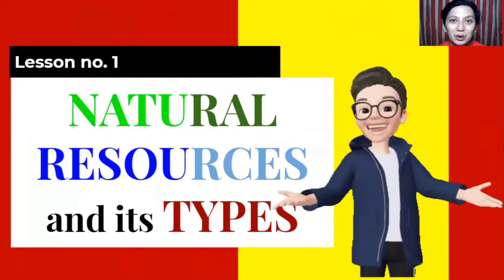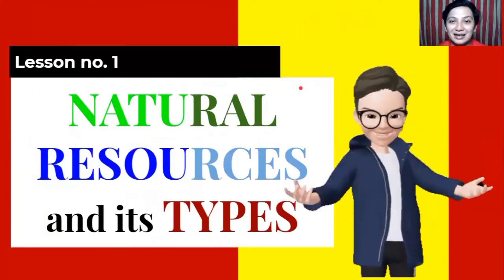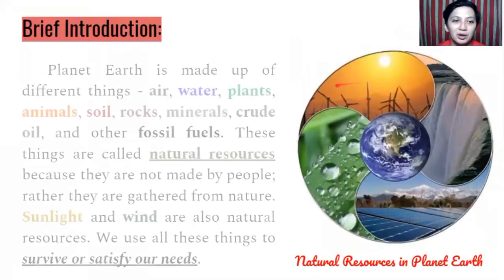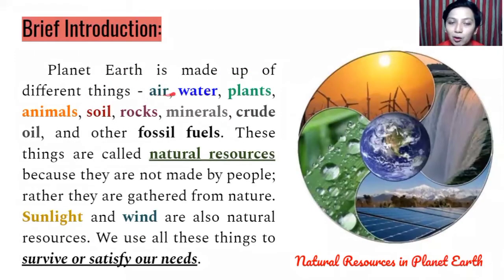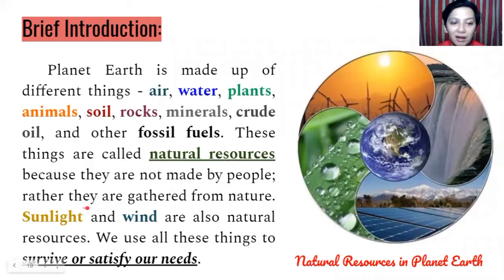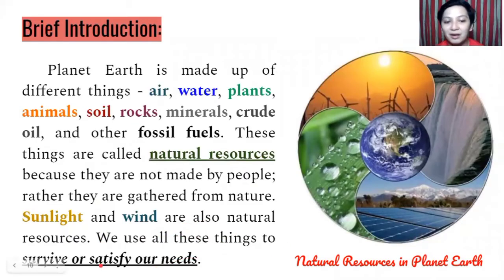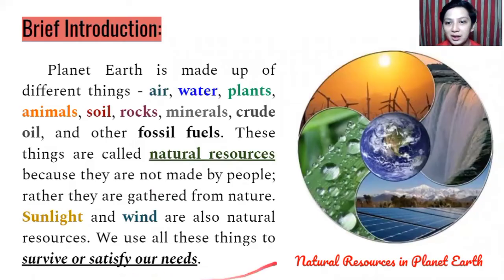For lesson number one, we are going to tackle natural resources and its types. As a brief introduction, planet Earth is made up of different things like air, water, plants, animals, soil, rocks, minerals, crude oil, and other fossil fuels. These things are called natural resources because they are not made by people — rather they are gathered from nature itself. Sunlight and wind are also natural resources. We use all these things to survive or satisfy our needs. It is very vital for life forms, especially human beings.